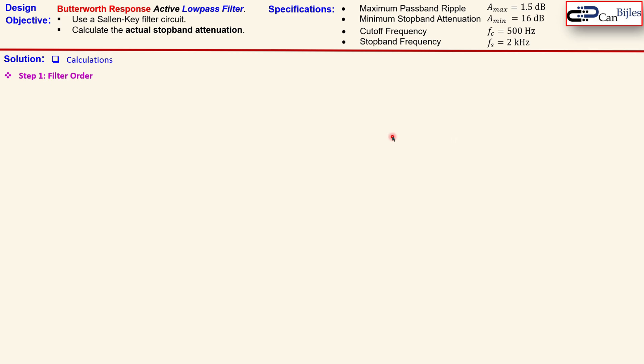We start by using the formulas in order to determine the required filter order. That is actually our step one. So we need to first scale these A_max and A_min to the epsilon_p which is related to that A_max.